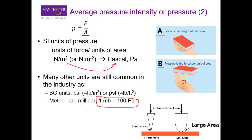Here is a concept question: you have two knives — one dull and one sharp — and you exert the same amount of force with each. Which knife exerts higher pressure? The answer is the sharp knife, because the sharp edge significantly reduces the contact area, which increases the pressure. The dull knife has a much larger contact area, while the sharp knife has a much smaller contact area.